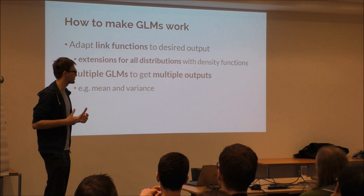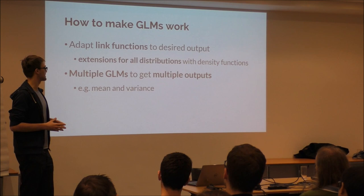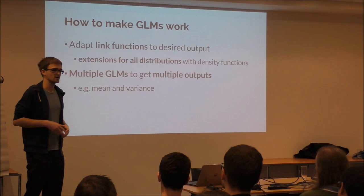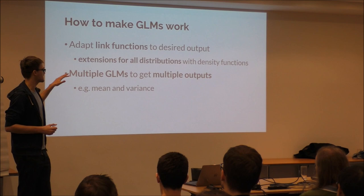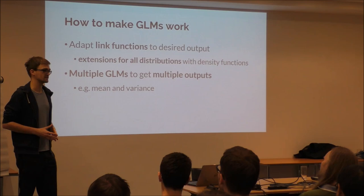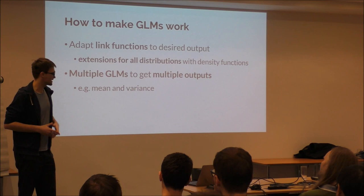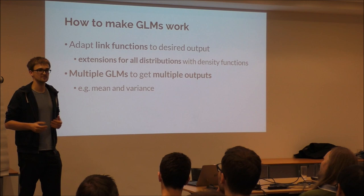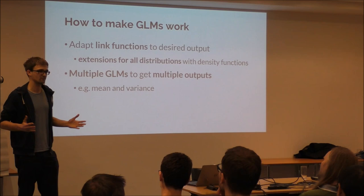How can you solve tasks with GLMs? You just need to find the right link function for the output you want. When you want output between 0 and 1 you use the logistic link function, and there are many extensions — many different link functions that you can adapt to basically all distributions. If you want a Poisson distribution output there's a link function for that. Sometimes you also want multiple outputs like mean and variance, and the way you solve this is you just have two models: one outputs the mean and one outputs the variance, with different link functions.